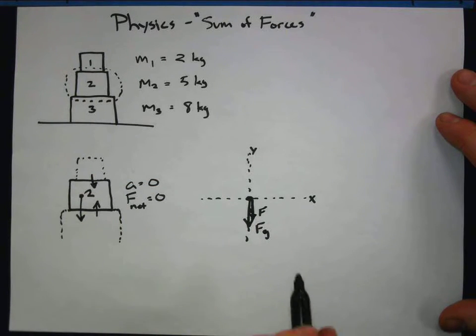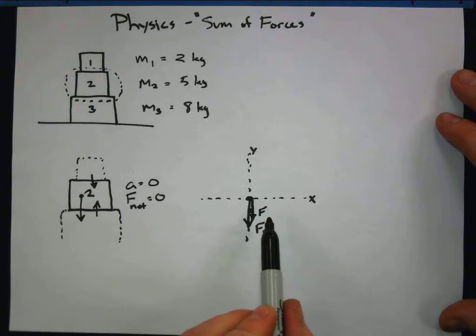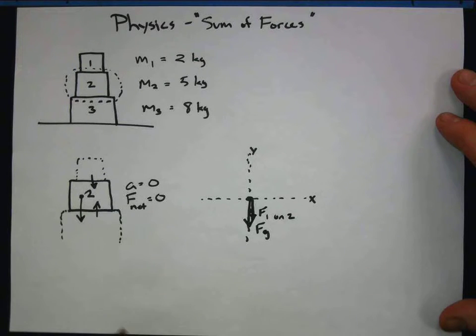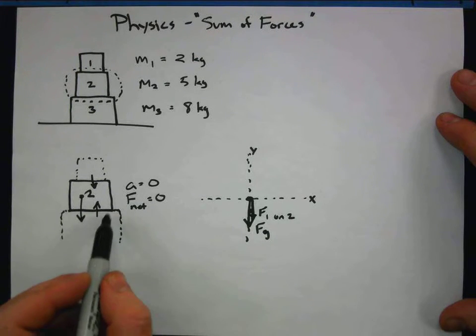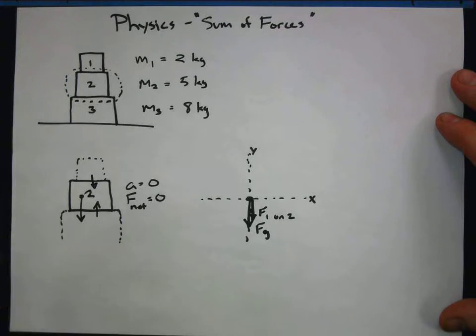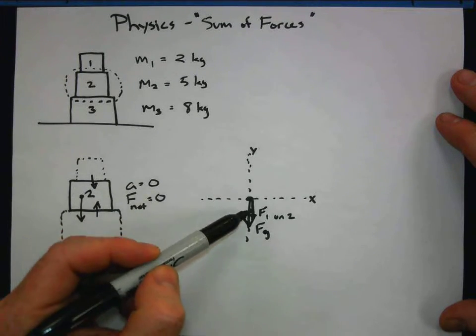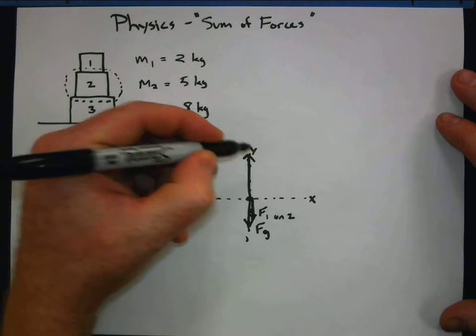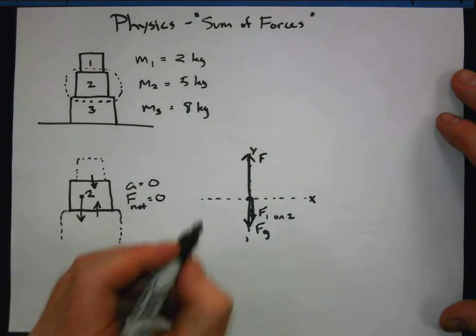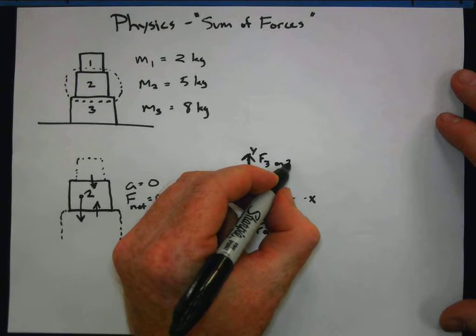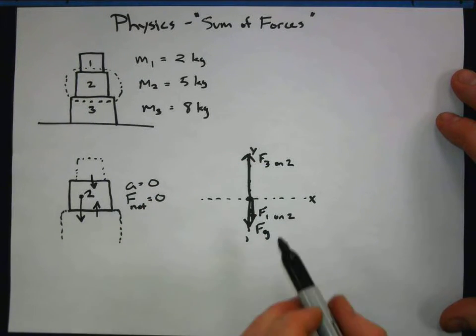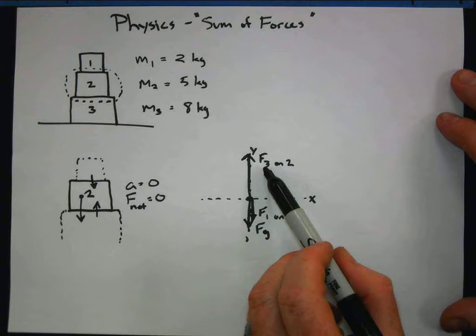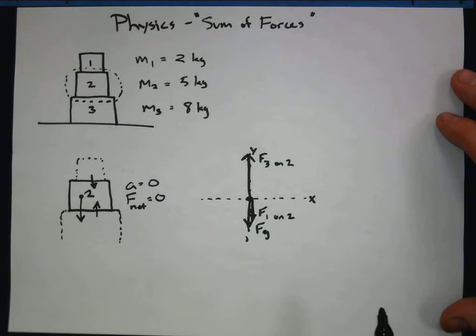This is the force of box one on two. There is also an upward force. This is another normal force here, but it's caused by box three. And what I know about this upward force is that it has to totally cancel all of the downward forces. So I need to draw this guy a little extra long. And this is the force of box three on box two. Force of weight, force of box one on box two, both those pushing down. And force of box three pushing up on box two.